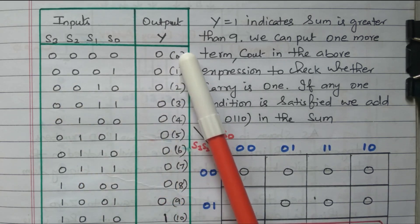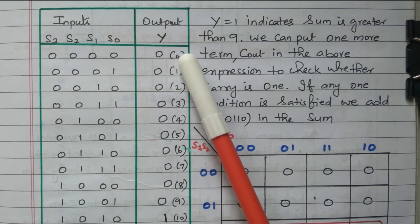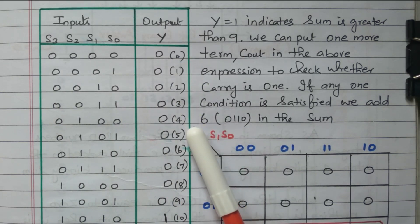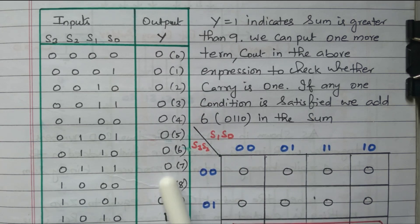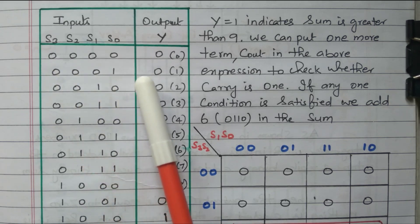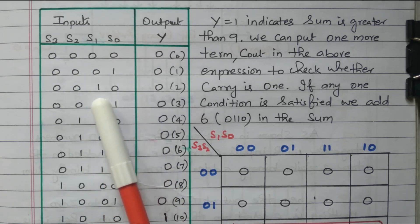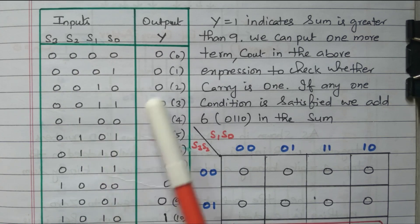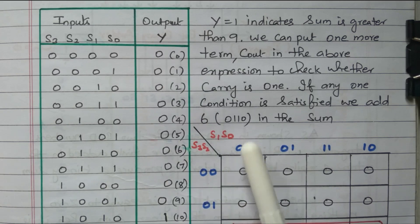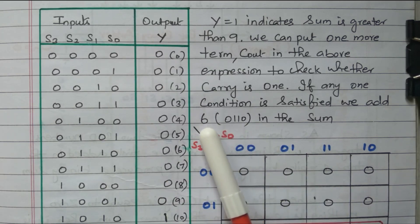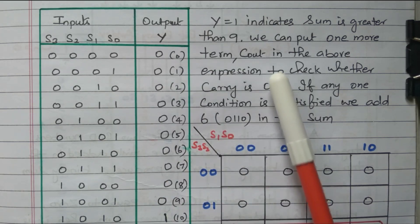This is the table. It gives the decimal numbers zero through nine. Up to nine there is no problem — the output Y is zero because it is only when greater than nine that we have a problem. There would be two different digit groups. So from zero to nine, Y is zero and no correction is needed — no need to add six from zero to nine.